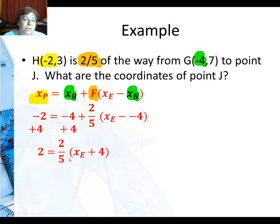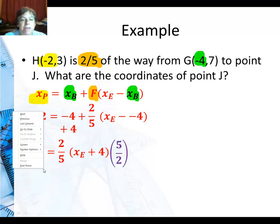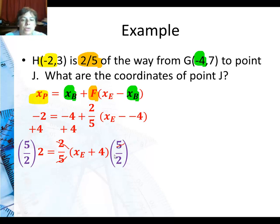Now I'm going to look at this two-fifths. Any time you have a fraction, if you multiply by the reciprocal, those simplify. The five and the five simplify to one, and the two and the two simplify to one. This two and that two also simplify, so my answer is five on the left side. So there you go, five equals x_e plus four. Then I subtract four from both sides. So the end point of the coordinate for j is one.